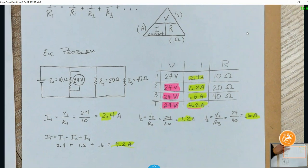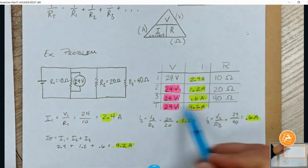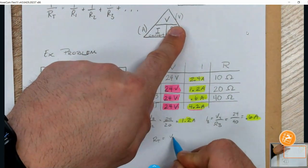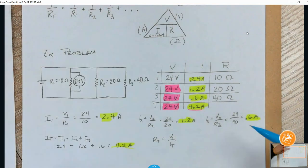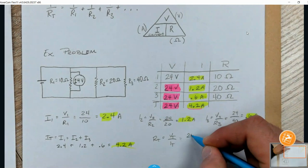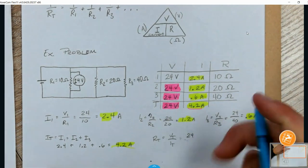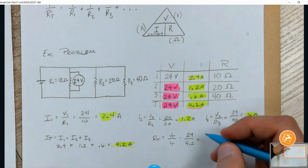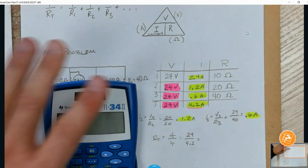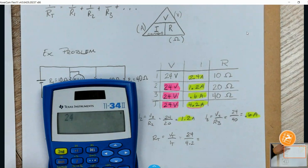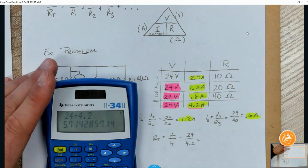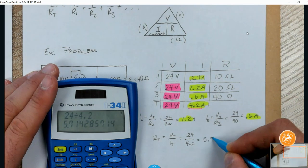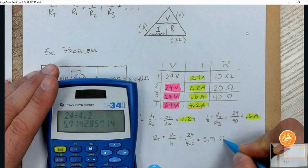Alright, so, if I want RT, if I cover up R in the triangle, it would be VT over IT. Let's see. So, I would do 24 over 4.2. And this comes out to give me, let's see. It's 5.71 but I want you to see this. Alright, so, 24 divided by 4.2. You get this 5.714 yadda yadda yadda. So, I'm just going to write 5.71 ohms.